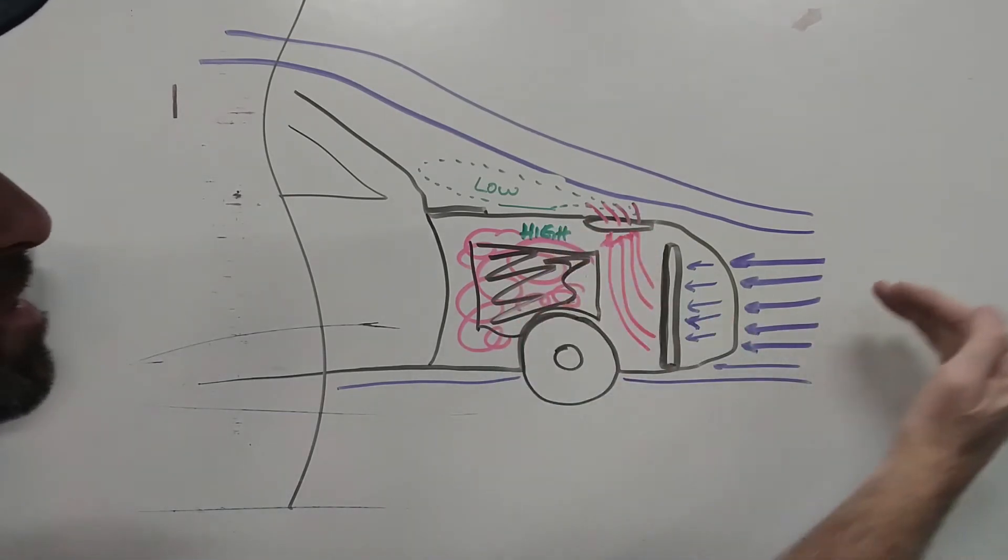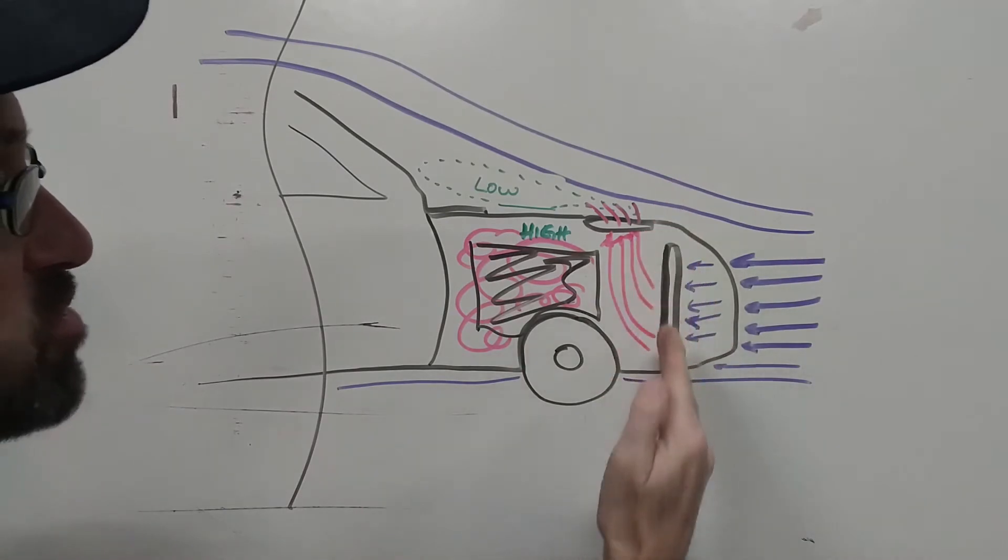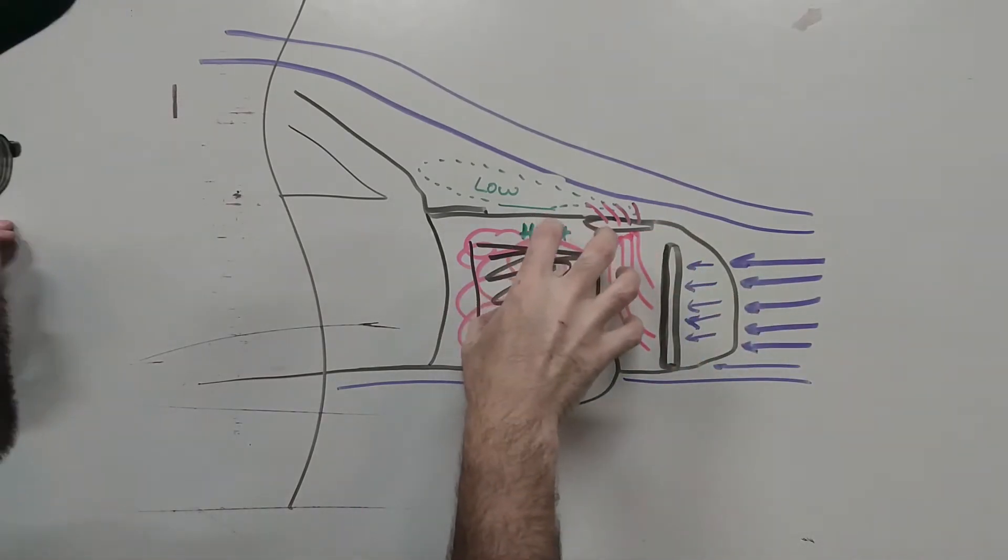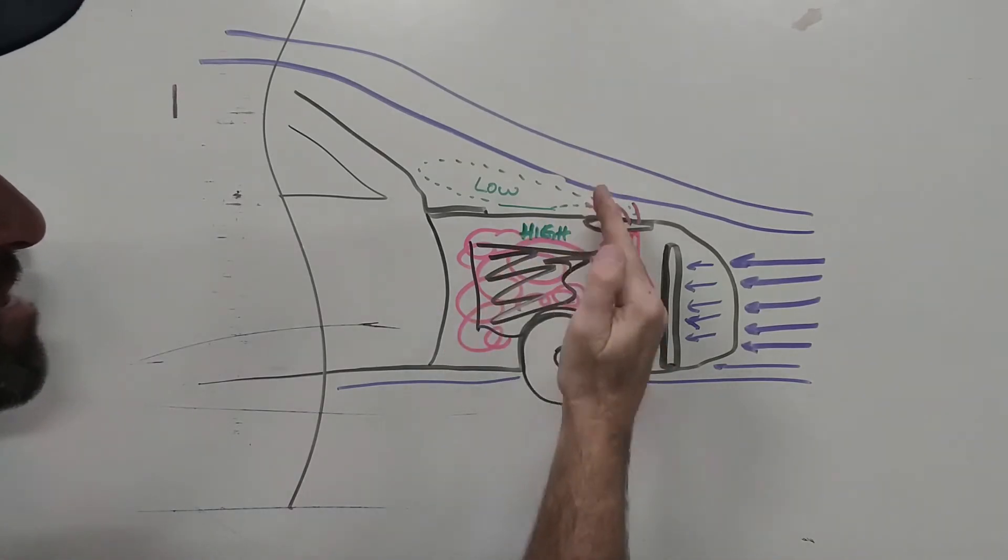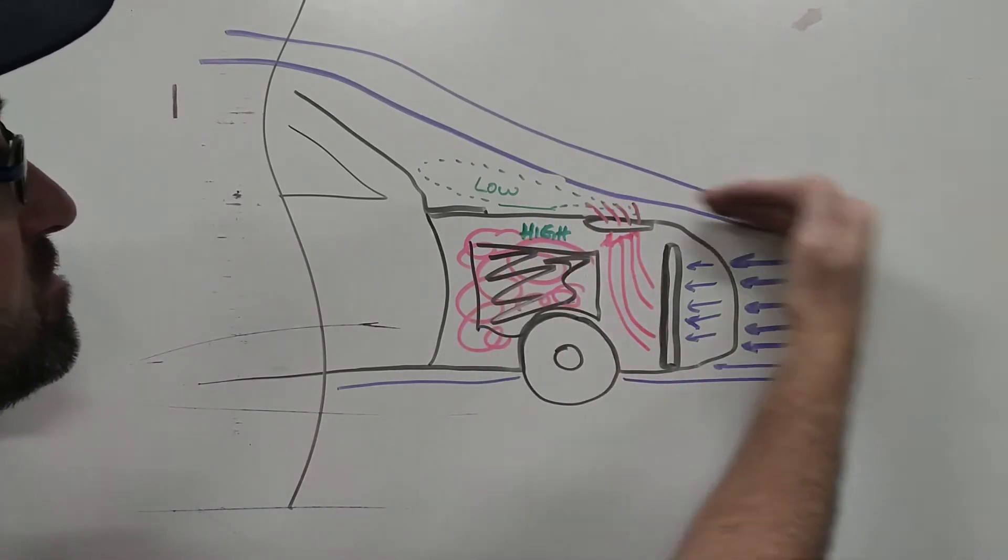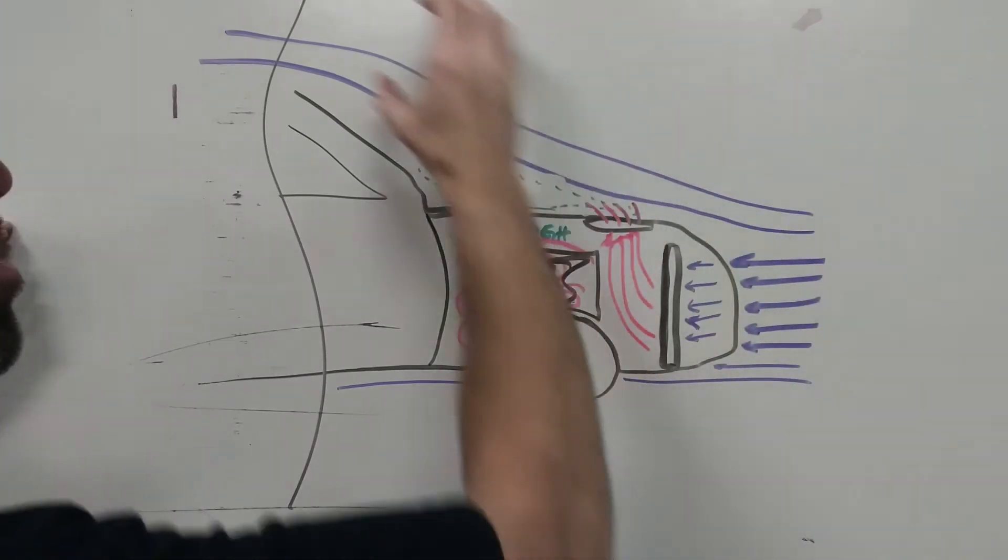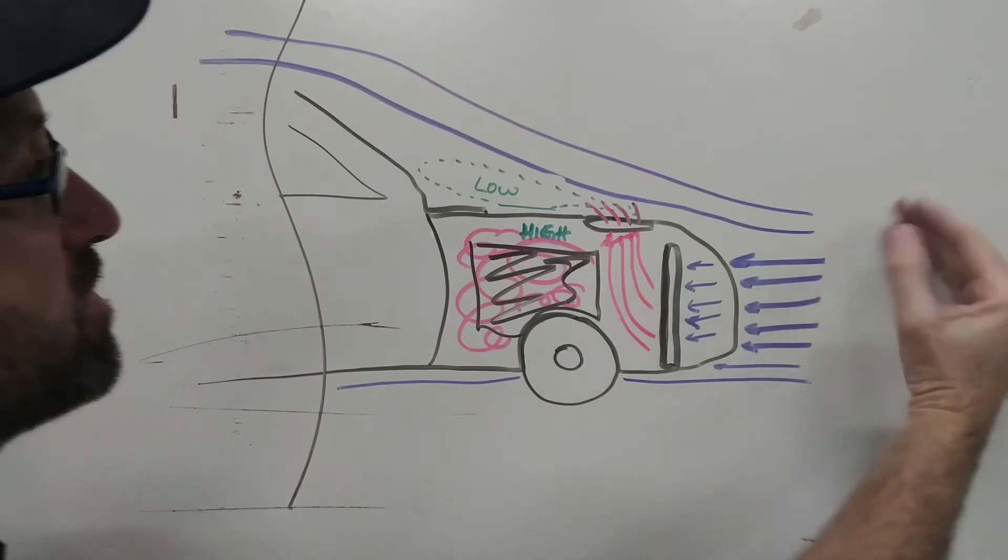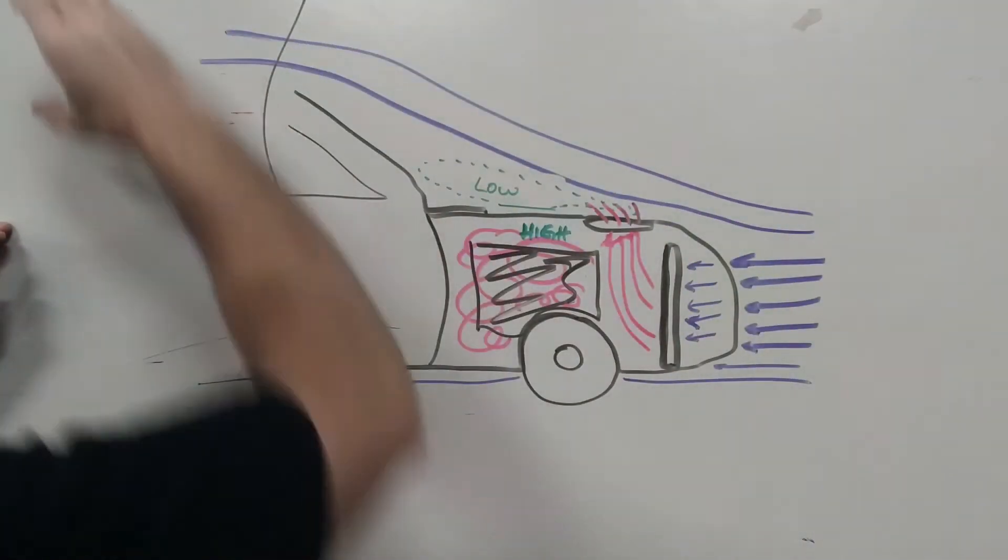With your hood louver, the cold air comes in, goes through the radiator, turns into hot air, but because it doesn't stay stagnant in the engine bay it has an exit point. The airflow over the car actually helps draw it out. This high pressure turns into low and actually gets drawn out up over the car.